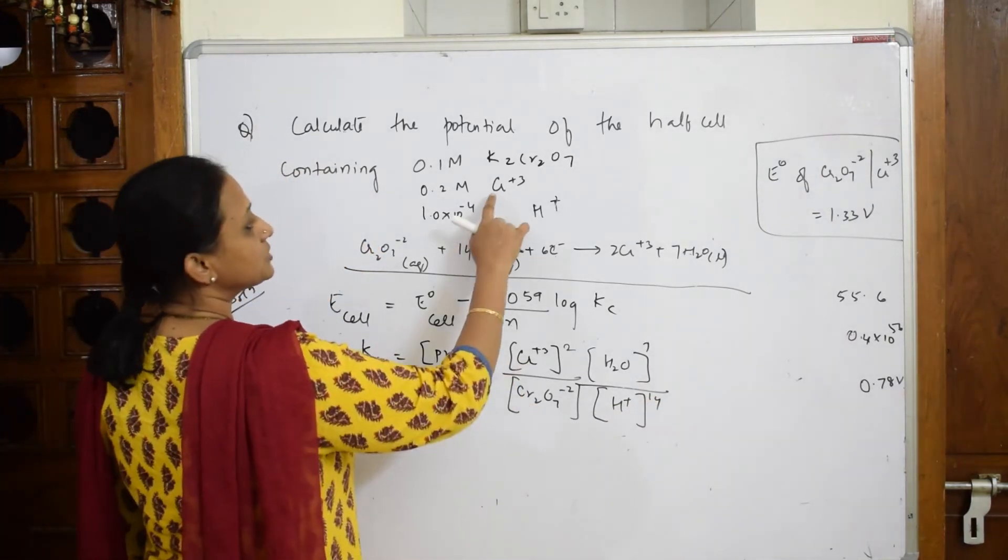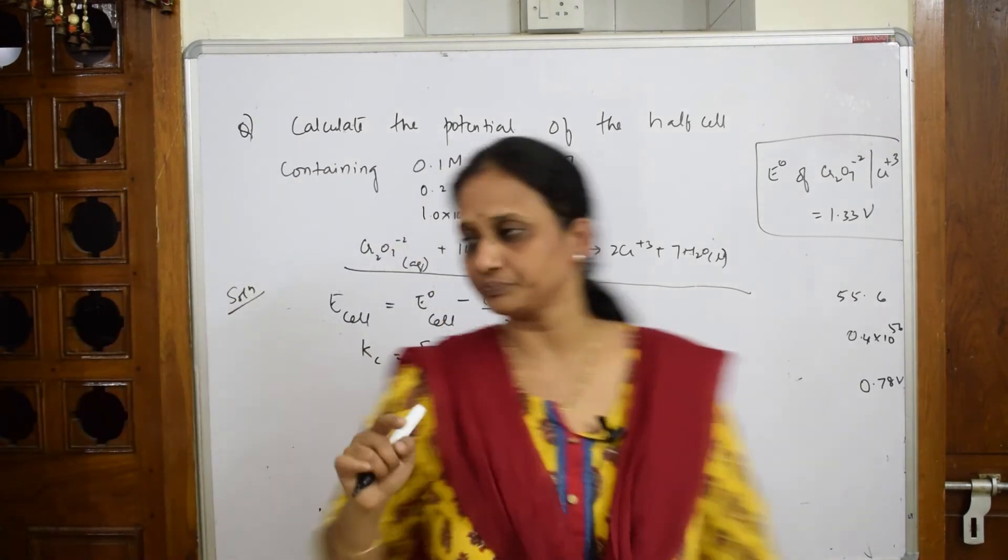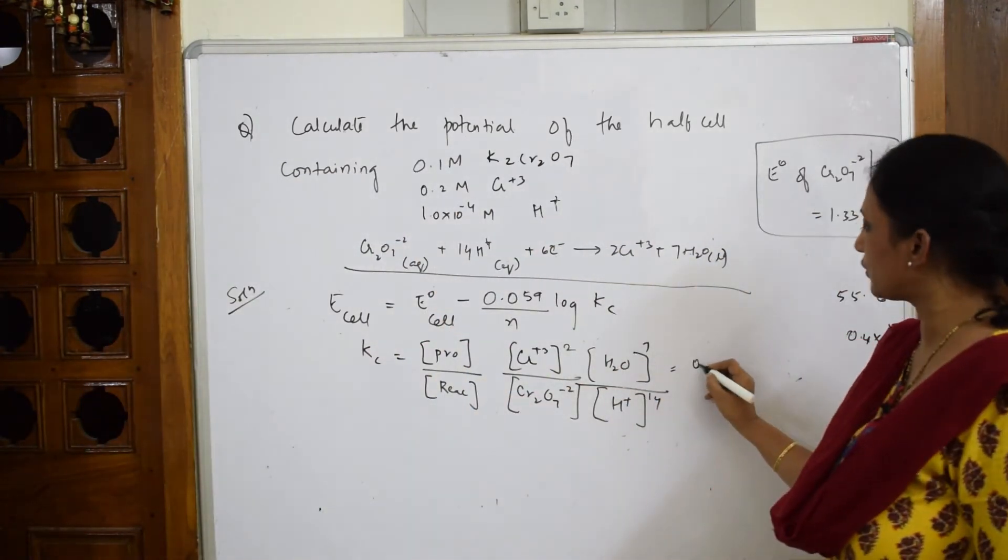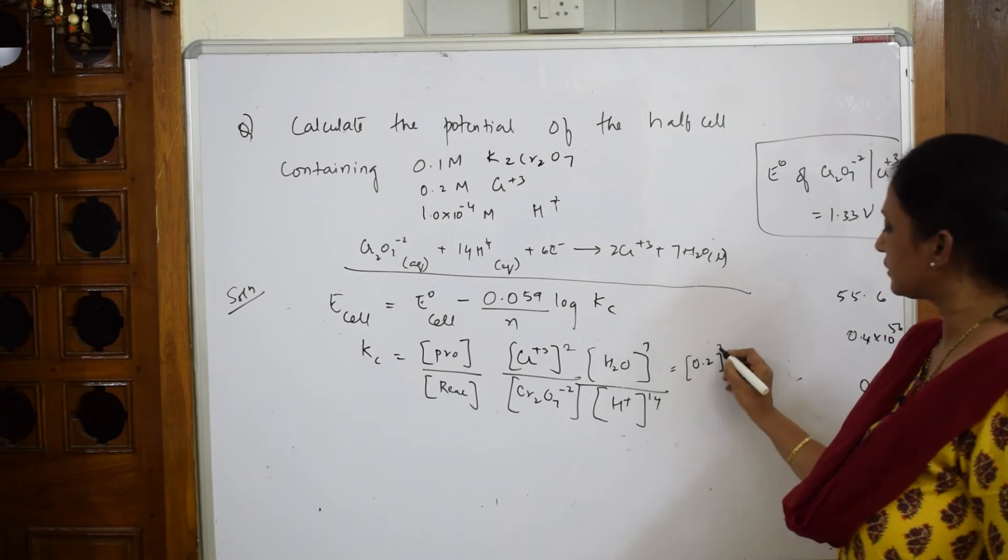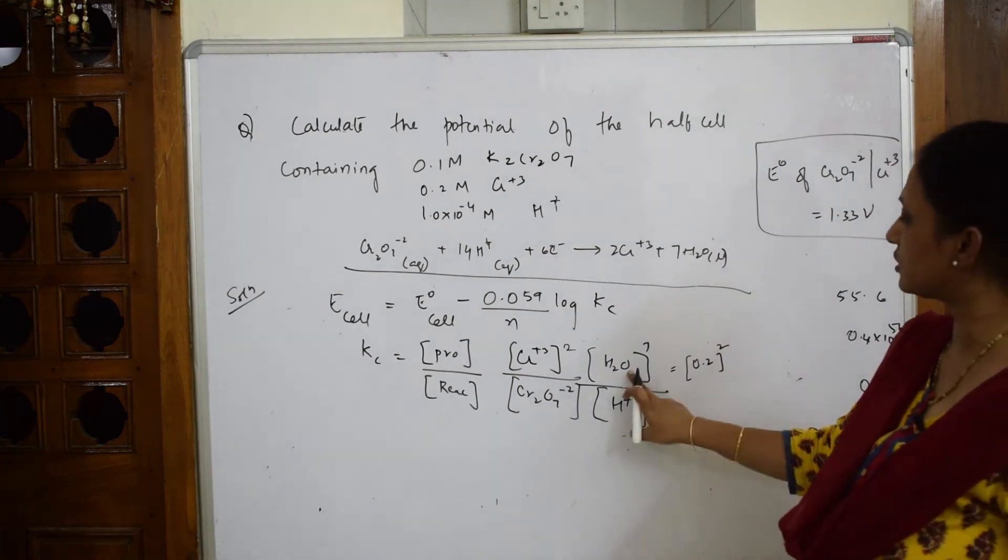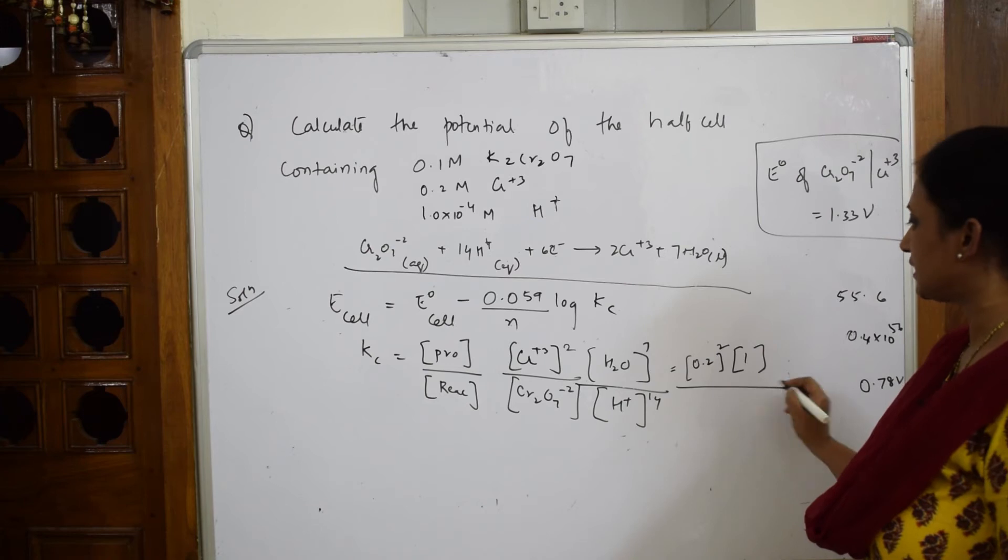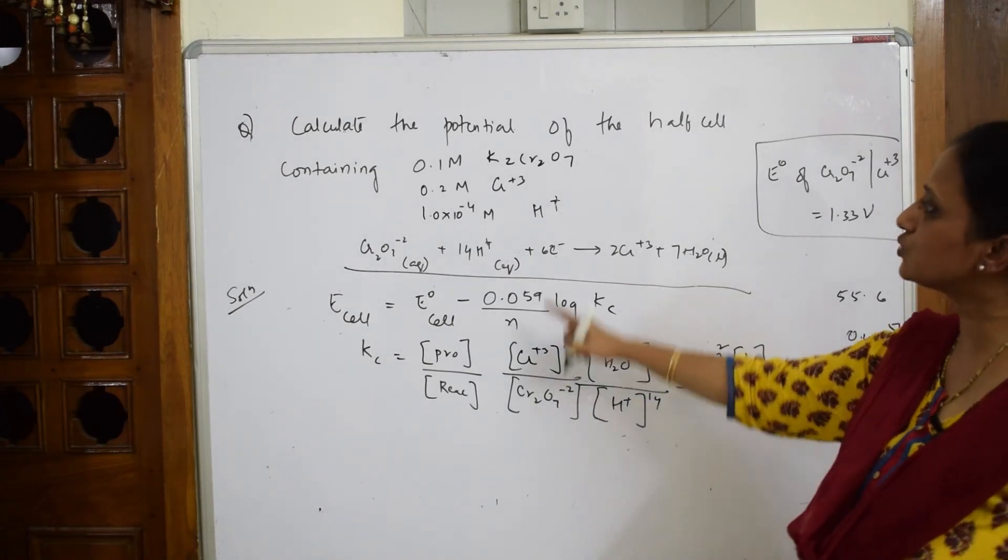What is Cr^3+ given? How much is the concentration? 0.2. Let us write that: 0.2 raised to the power of 2 coefficient. How much is water? Water is 1, always isn't it? 1 divided by Cr2O7...